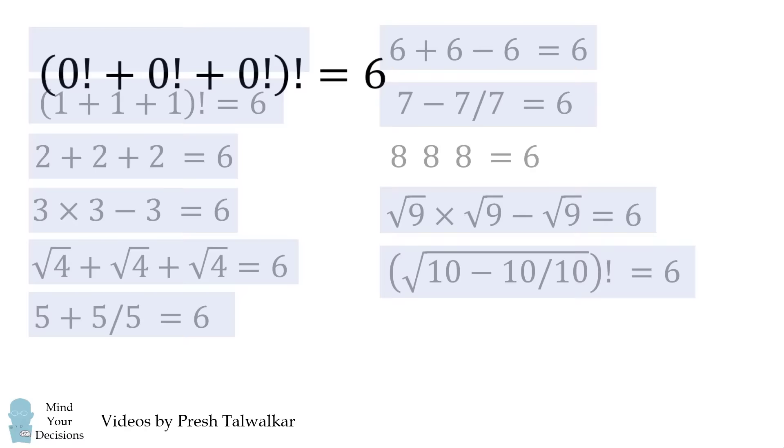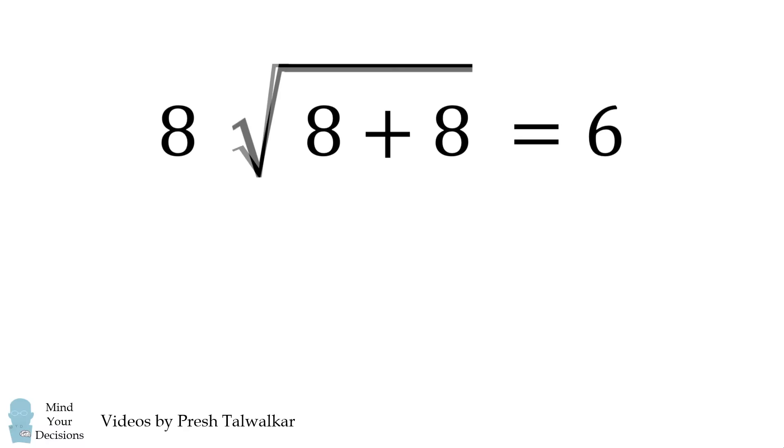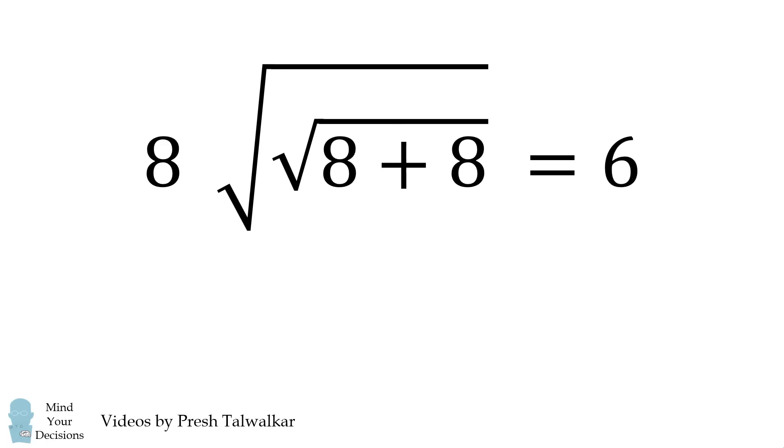Finally, how do we solve 8 8 8 is equal to 6? Many people consider this to be the hardest of all of these equations. So, we'll work in steps. We'll take 8 plus 8 and that's equal to 16. We'll take the square root of that and the square root of 16 is equal to 4. We then take the square root of the square root of that. So, the square root of the square root of 16 will be equal to 2. Now, we take 8 minus 2 and that's equal to 6. So, that's one way to solve this.